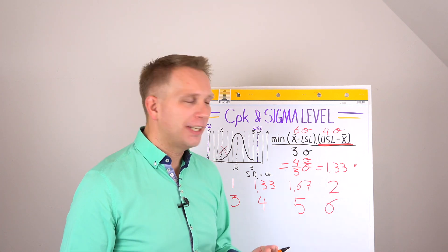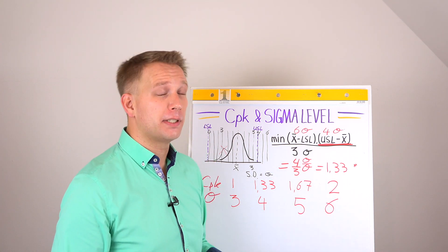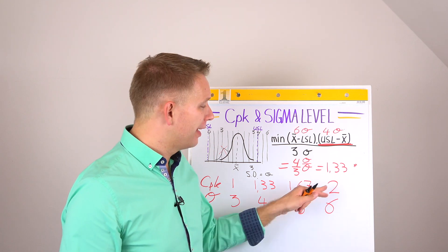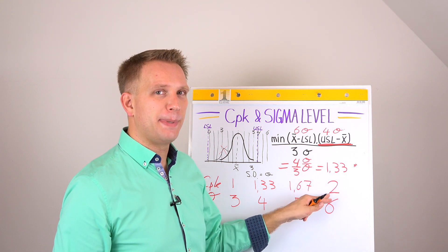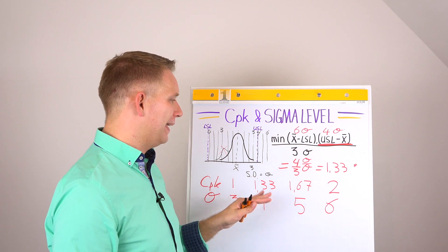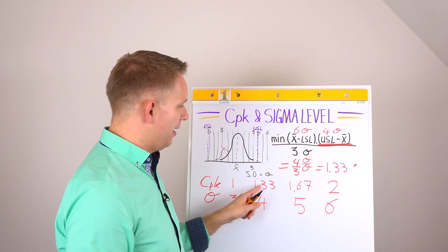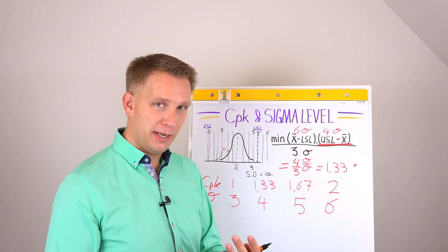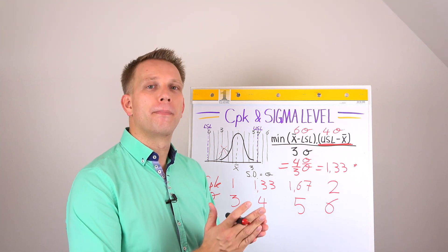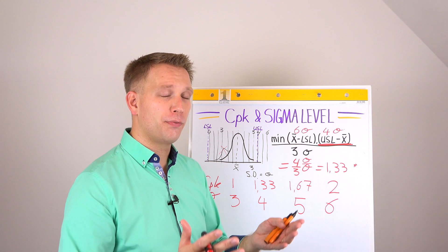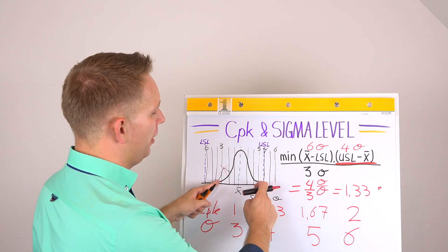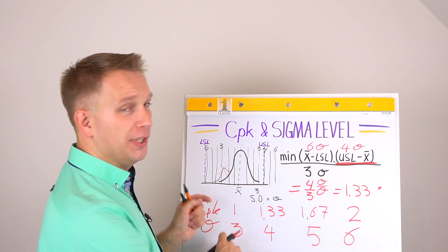That's also why in industry, you will not see many companies, luckily, for now, because not all our processes are that well, really asking for this CPK of 2. Many customer companies are asking for one of these two. So, either 4 or 5 sigmas away from the specification limits on both sides. That has to do with most of our products fall within 3 sigmas.